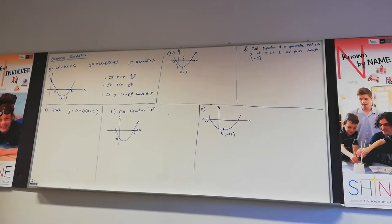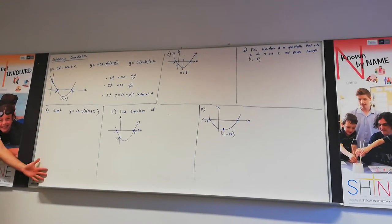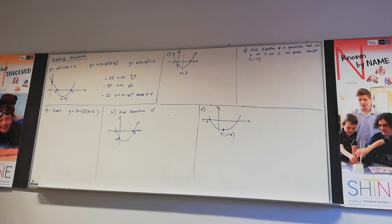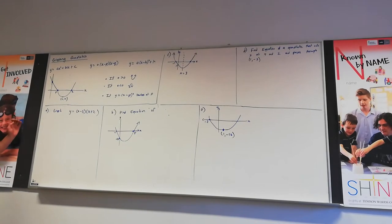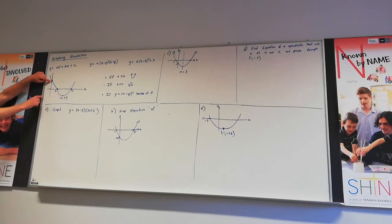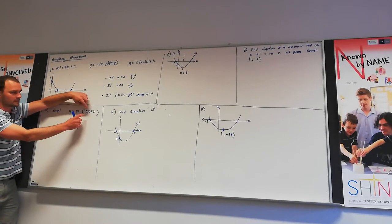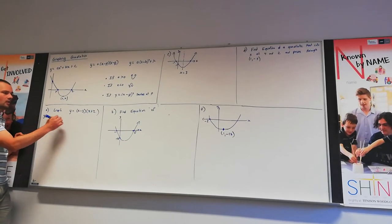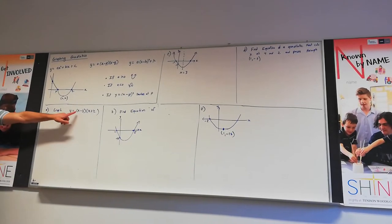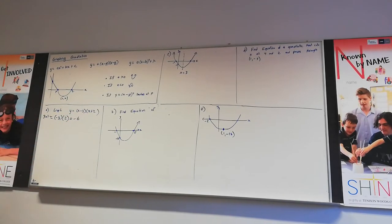We're going to leap straight into graphing. I'll do this one slowly to point out exactly what's going on. To graph a quadratic we need three things: the first x-intercept, the second x-intercept, and the y-intercept — three points and then we can plot everything. For the y-intercept, it occurs when x is 0, so we substitute x = 0 into the equation. That gives us 0 minus 3 times 0 plus 2, which equals positive 2, then minus 3 times 2 is minus 6 — that's the y-intercept.